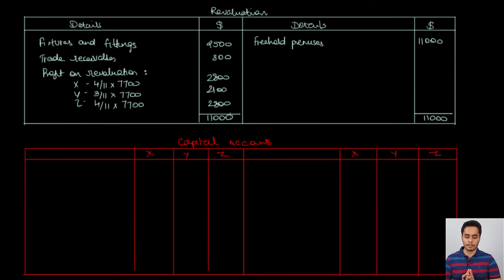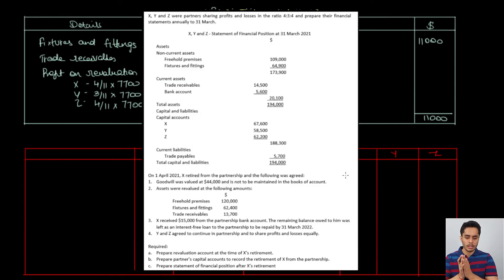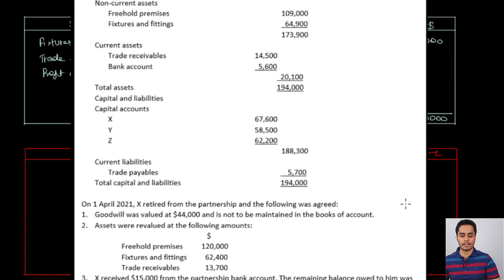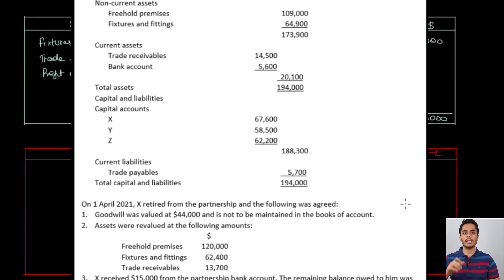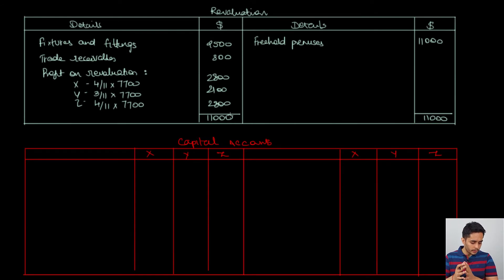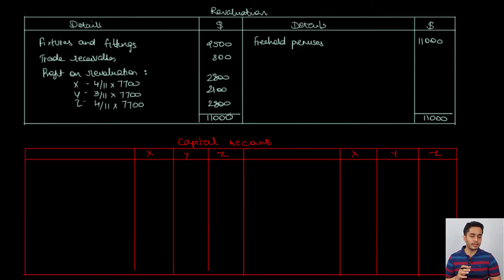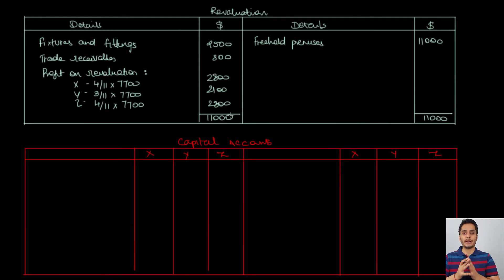The capital account begins with balances brought down from the balance sheet: 67,600 for X, 58,500 for Y, and 62,200 for Z. The profit on revaluation is then credited per the revaluation account. Next, goodwill is created at 44,000 and credited to all partners in the ratio 4:3:4 — giving 16,000 to X, 12,000 to Y, and 16,000 to Z. When writing off the goodwill, only the continuing partners Y and Z are debited in their new profit sharing ratio of 1:1 — 22,000 each.